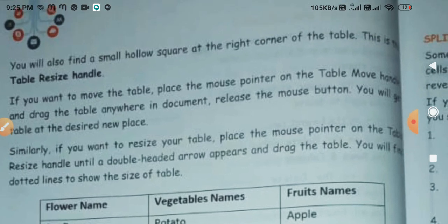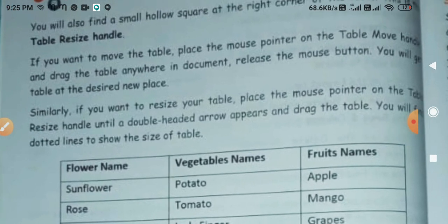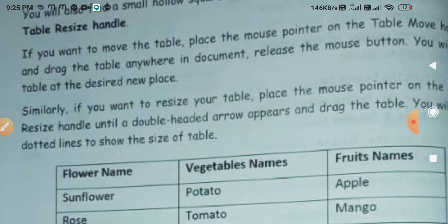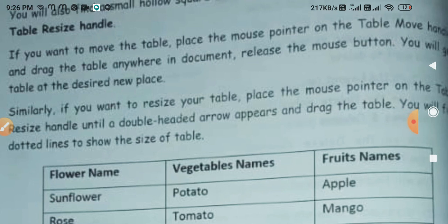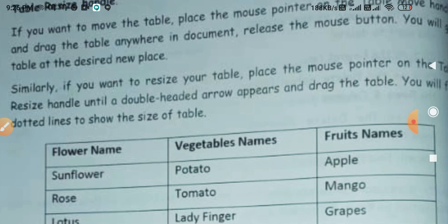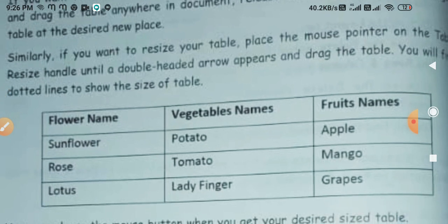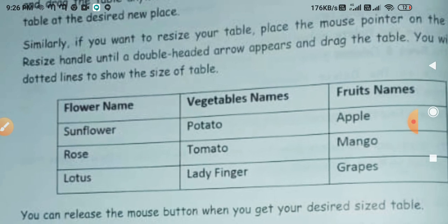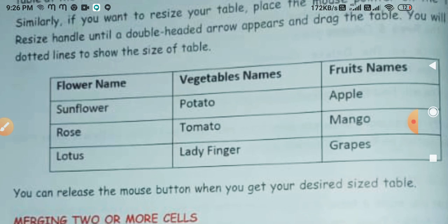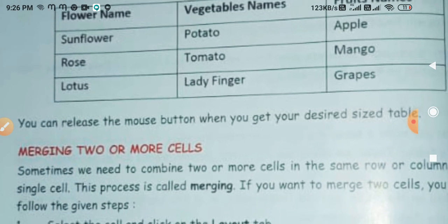You will also find a small hollow square at the right corner of the table — this is the table resize handle. If you want to move the table, place the mouse pointer on the table move handle and drag it anywhere in the document, then release the mouse button and you will get the table at the desired new place. Similarly, to resize, place the mouse pointer on the resize handle until a double-headed arrow appears, then drag and dotted lines will show the size of the table.